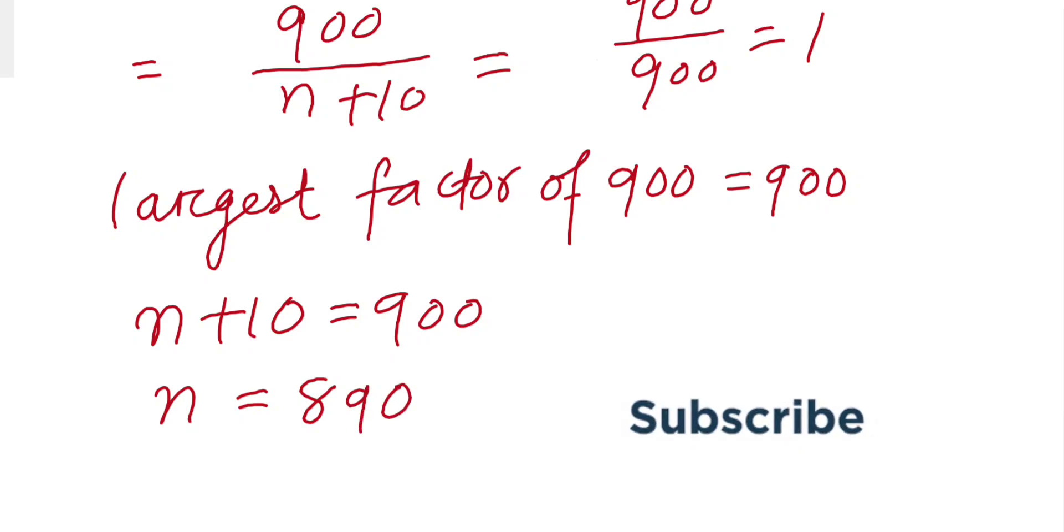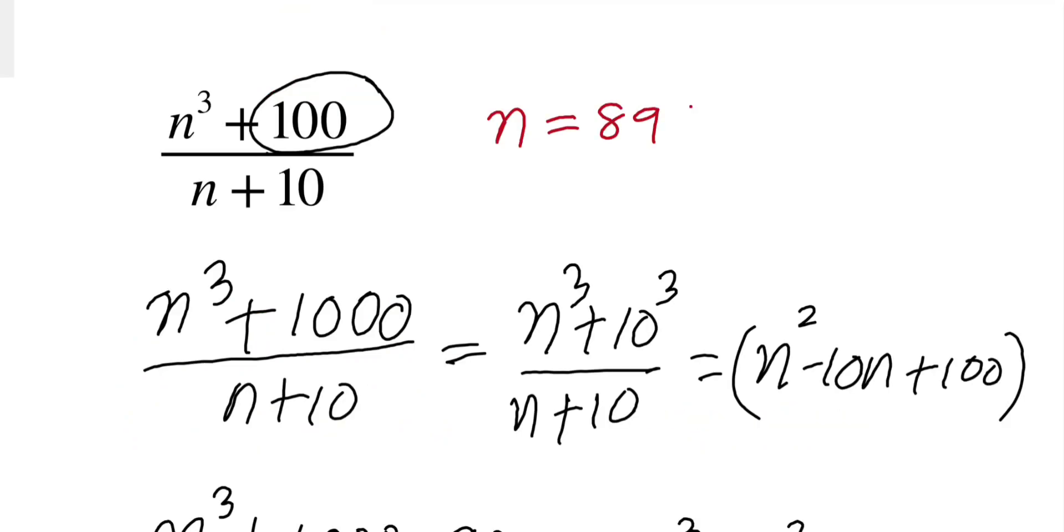From here n equals 890, which is our solution. So the biggest possible number 890 is the largest possible positive integer which makes this whole expression an integer. Thank you for watching, see you next time.